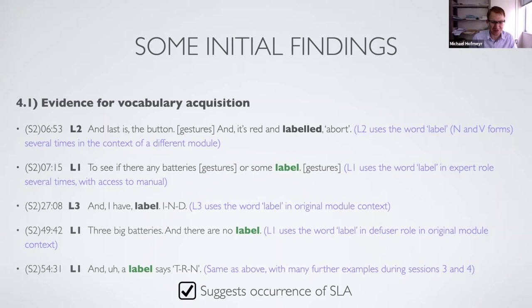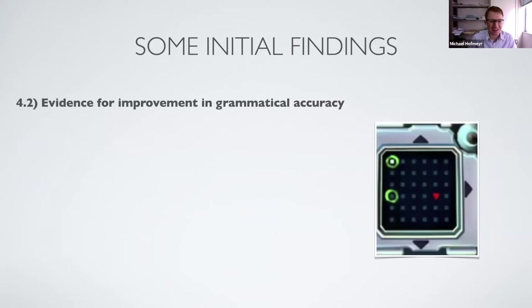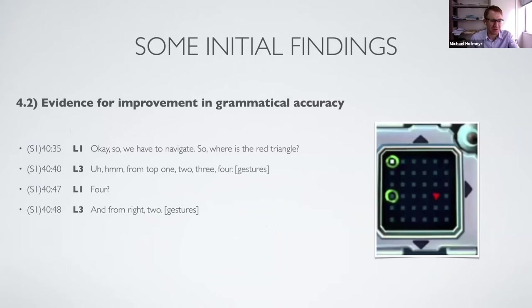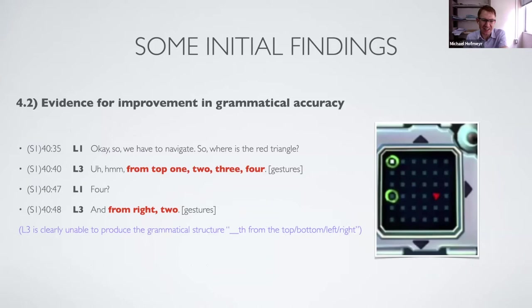Here's an interesting example of improvements in grammatical accuracy. In session one, learner three sees the maze module and tries to describe where the red triangle is, saying 'from top one two three four, from right two' — a clumsy way of explaining it. The grammatical structure he seems to be lacking is 'second from the top' or 'second from the right.'